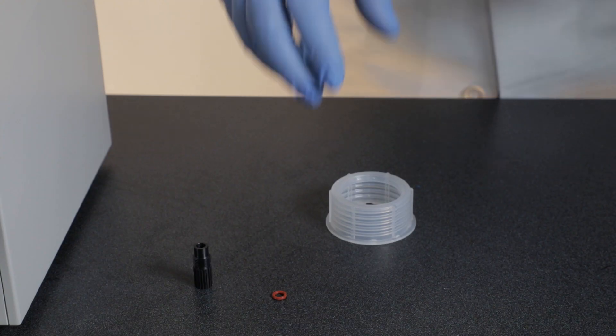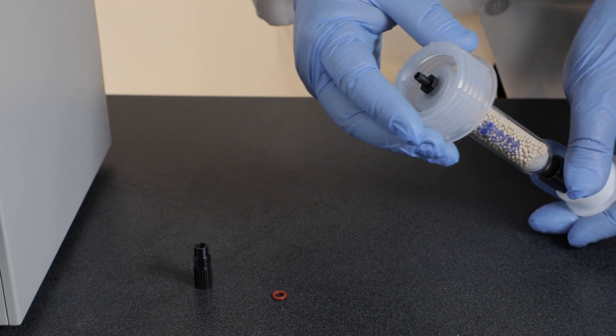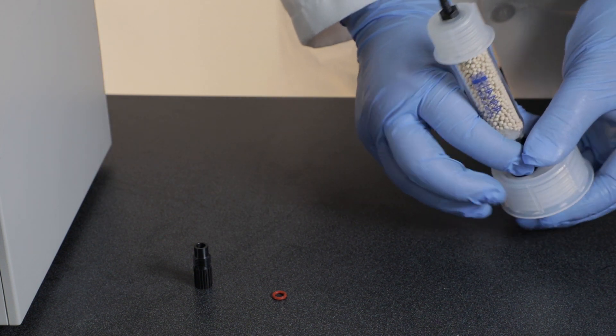Next, place a GL45 clear bottle screw cap over the assembly and screw it onto the analyte bottle.